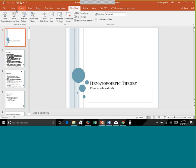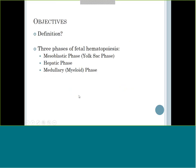The word hematopoiesis basically means blood cell development - it's the development of all of our blood cells: the red cells, the white cells, the platelets. All those blood cells being developed.